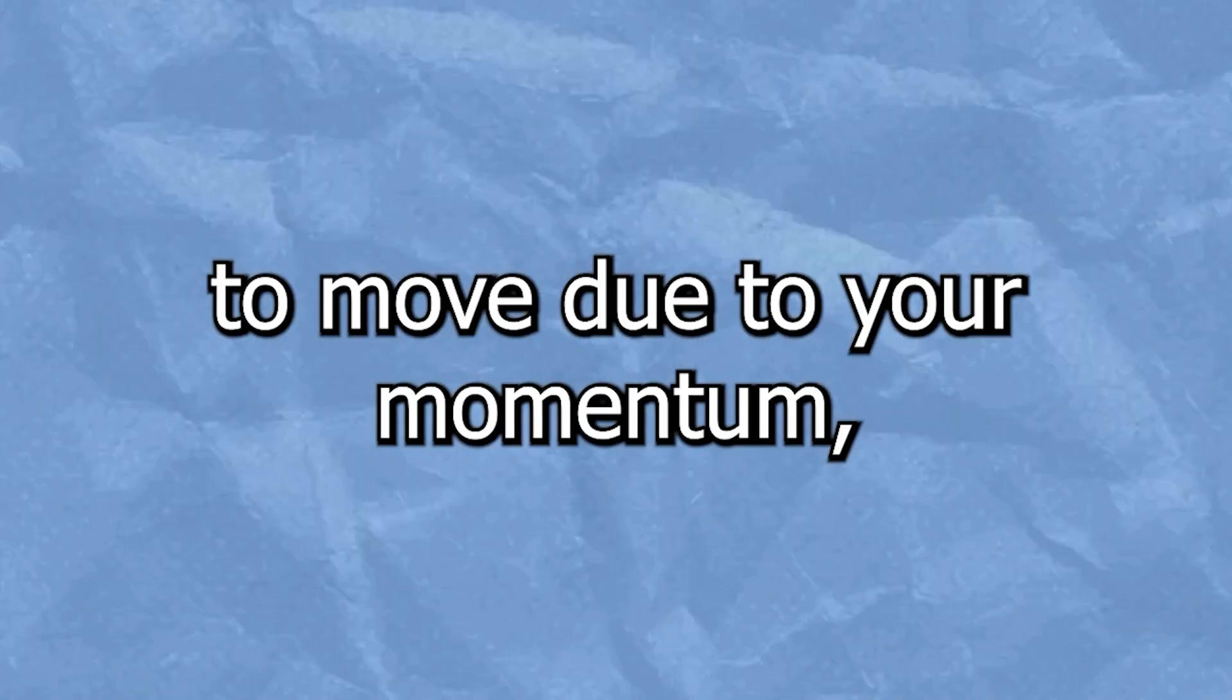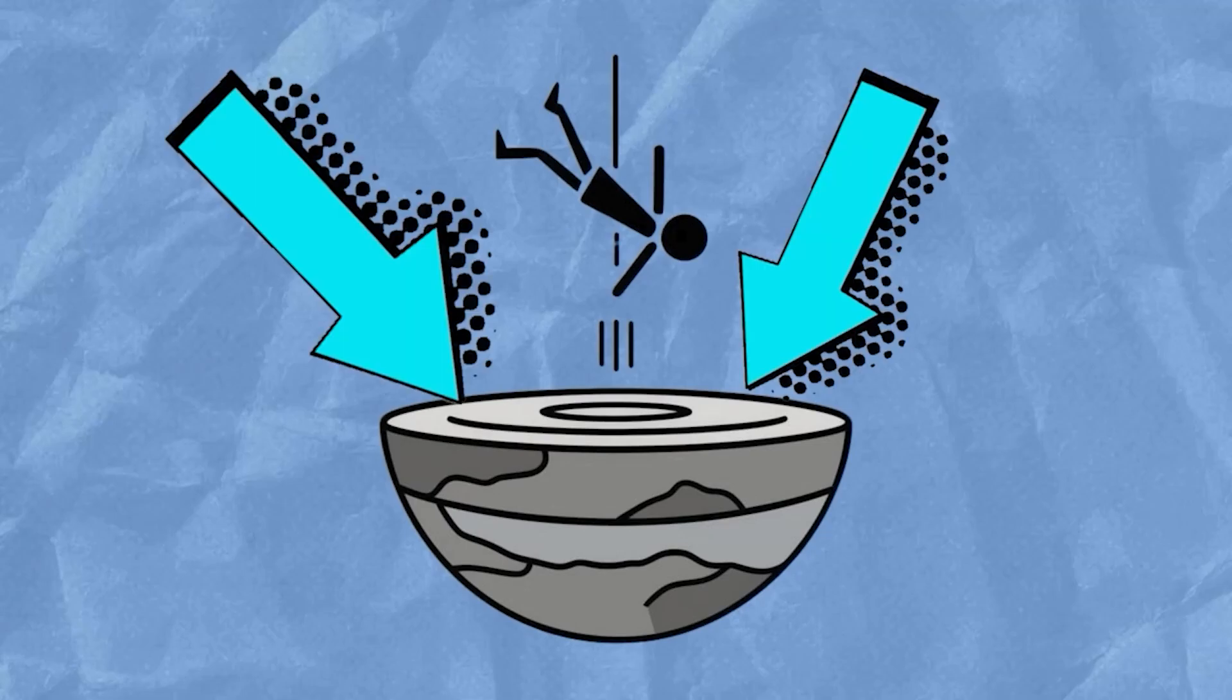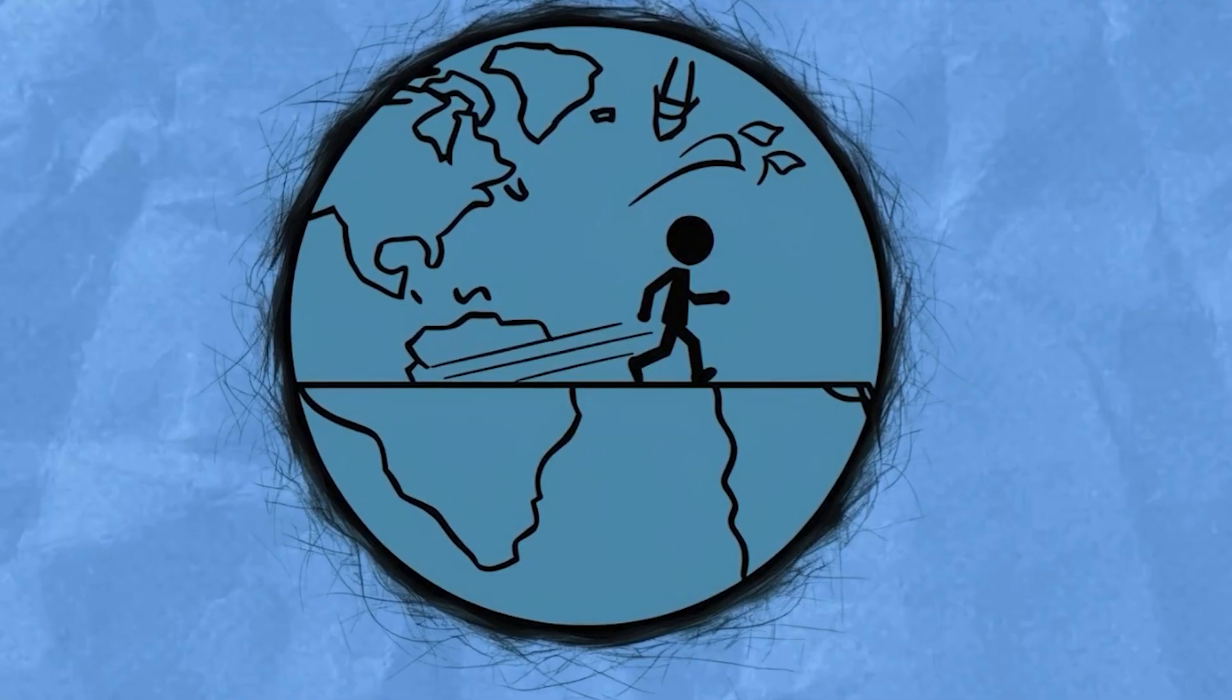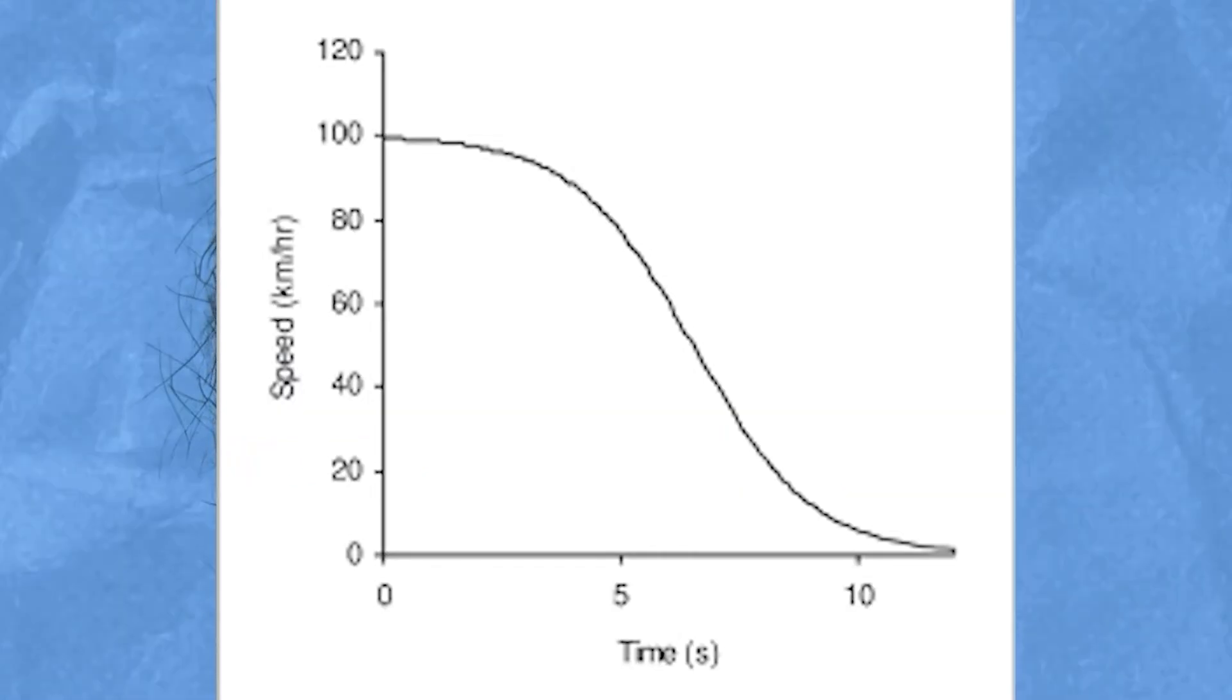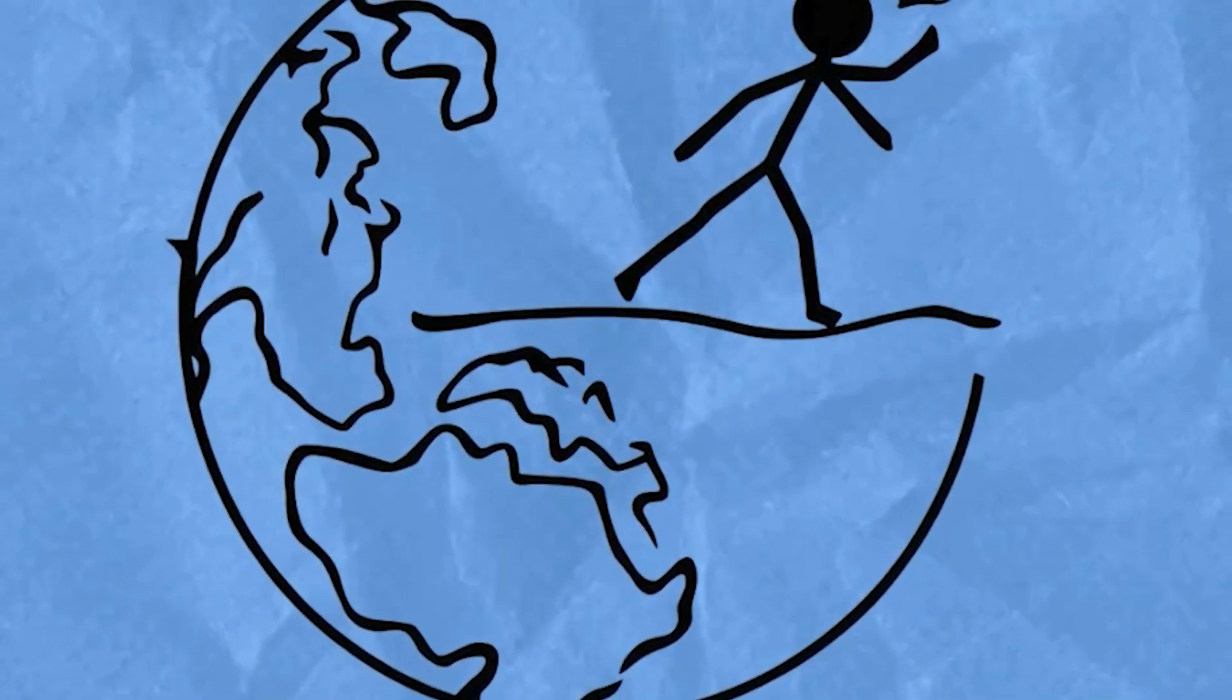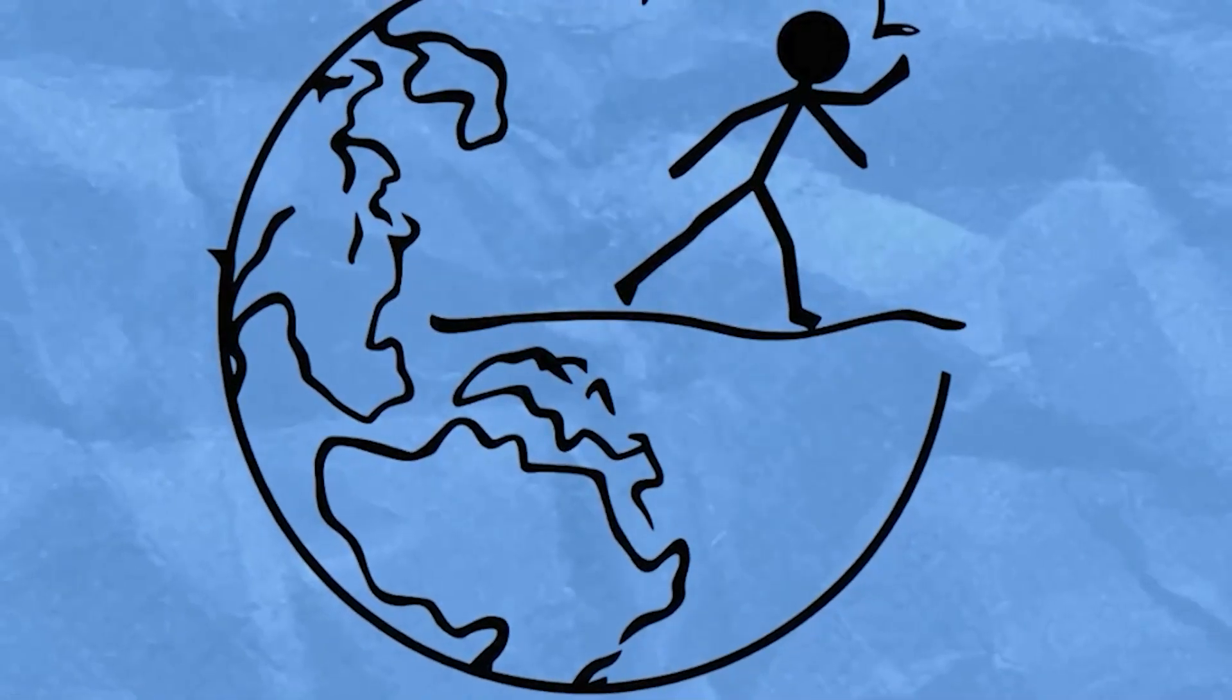You would then continue to move due to your momentum, but now gravity would be pulling you back toward the centre. So, as you pass through the centre and start moving towards the other side, you would begin to decelerate. By the time you reach the opposite surface, you would have slowed down to a stop just as you reached the exit of the tunnel.